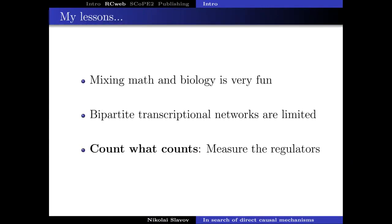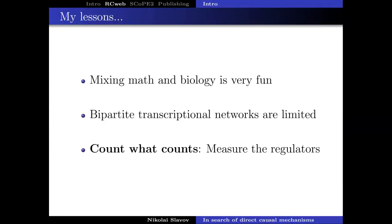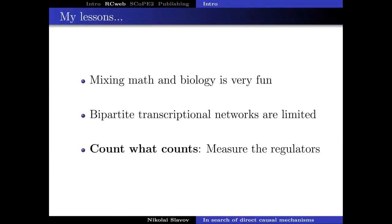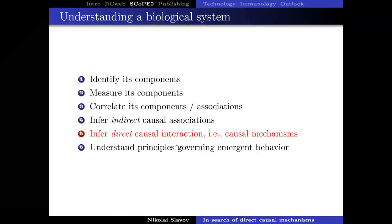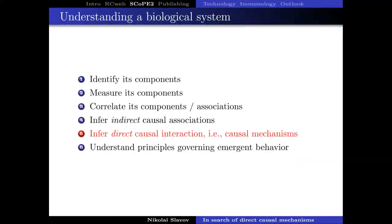Towards the end of my PhD, I had concluded that quantitative approaches can be fruitful and quite fun when applied to biological systems. I was also somewhat disappointed with the limitations of bipartite transcriptional networks, and was very interested in measuring what's important — not just what's really convenient to measure — and in beginning to characterize the regulators. I'm going to suggest one possible way, very difficult but perhaps possible, of how we might directly aim for causal interactions and direct causality in biological systems.